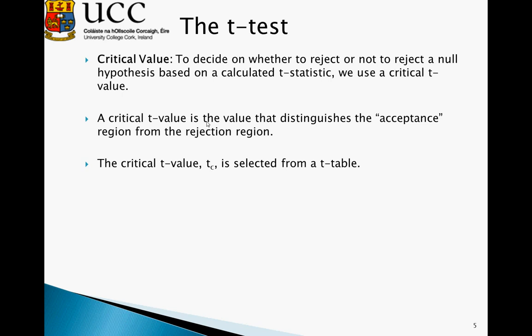So we obtain this from the t-tables based on whether it is a one-tailed or two-tailed test and based on the number of degrees of freedom we have.